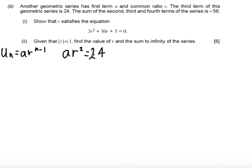We're then told the sum of the second, third and fourth terms is minus 56. So the second term is a times r to the power of 2 minus 1, which is 1. And then the powers of r are going to go up successively. So we get ar, ar squared plus ar cubed is equal to minus 56.